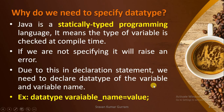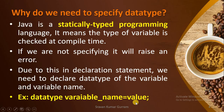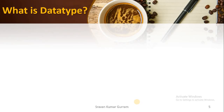Then how to declare a variable? The syntax is: first write the data type, then a space, then the variable name, then the assignment operator, and then the value you want to store into the variable.